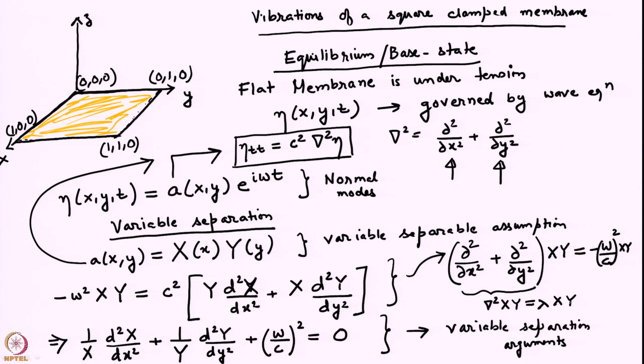Boundary conditions will discretize the values of lambda — only certain values of lambda will allow a non-trivial solution satisfying those boundary conditions. That will determine our eigenfrequencies and in turn our eigenmodes. We will write our final answer as a linear superposition of all the eigenfunctions, with a double summation because there are two eigenfunctions in two directions.